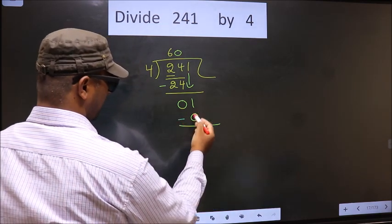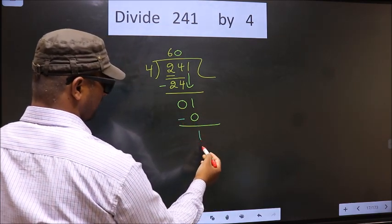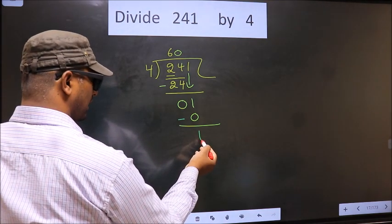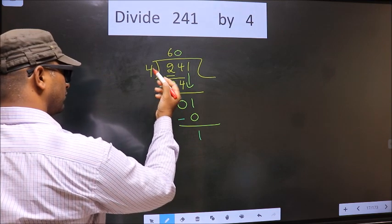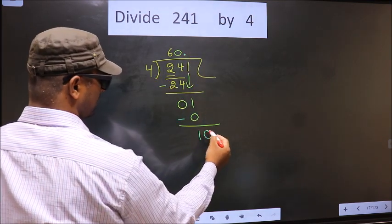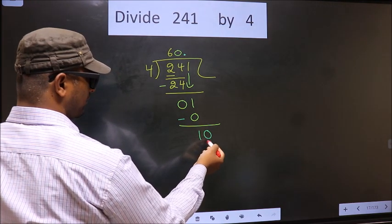Now, you subtract. 1 minus 0, 1. Over here, we did not bring any number down. And 1 is smaller than 4. So, now you put a dot and take 0 here. Now, here we have 10.